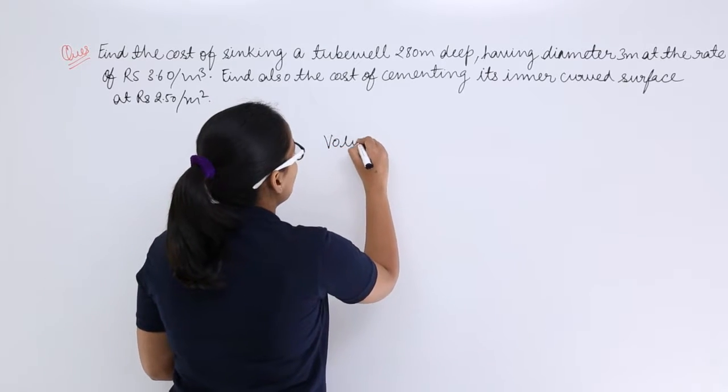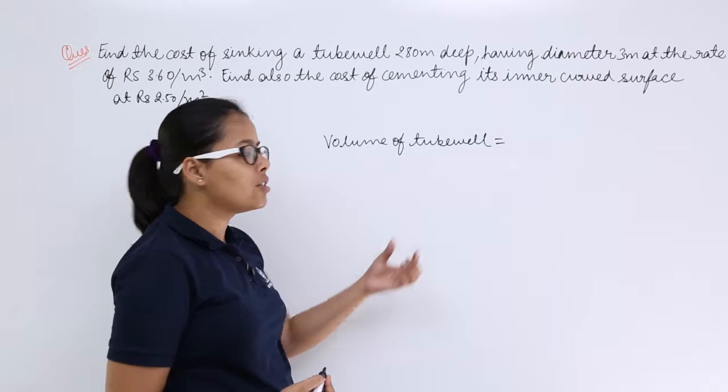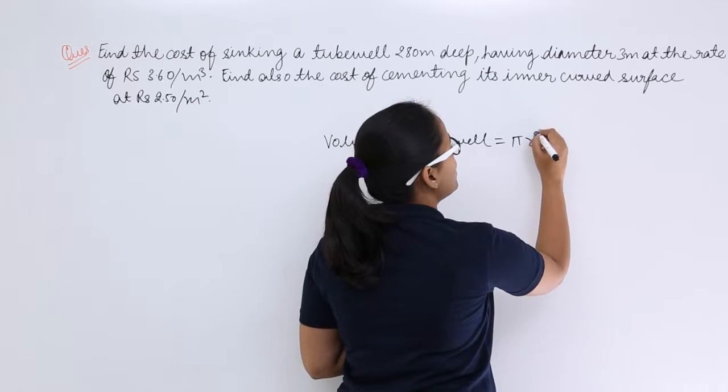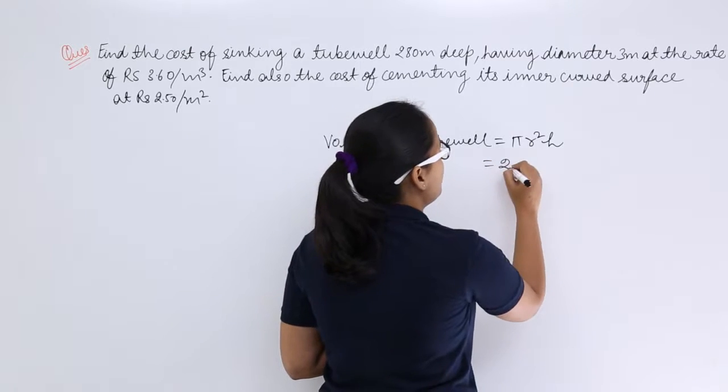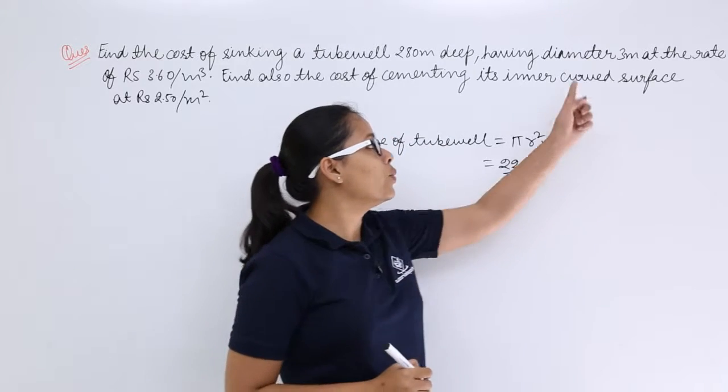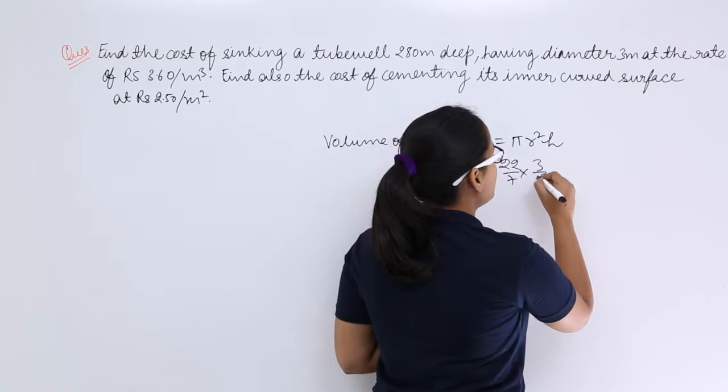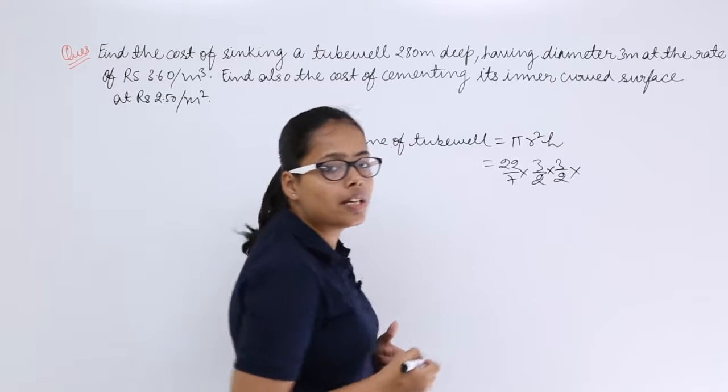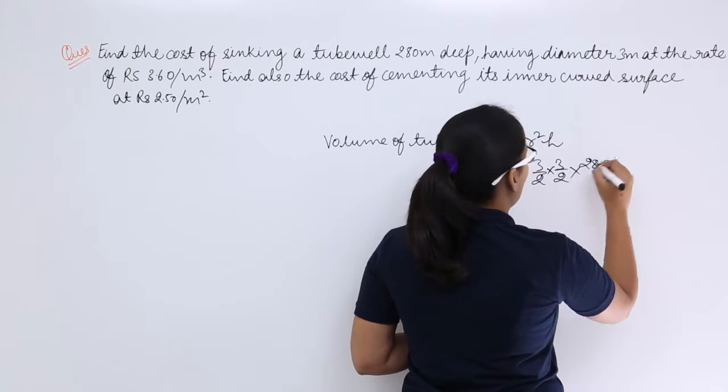So, volume of this tube well will be, volume of tube well, and you know that this tube well is in the shape of a cylinder and the volume of the cylinder is πr²h. What is the value of pi? 22 by 7. What is the radius? You know that diameter is 3 meters. So radius will be half of the diameter which means 3 by 2 into 3 by 2, and height of this is 280 meters.